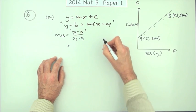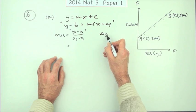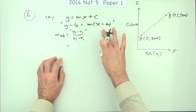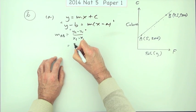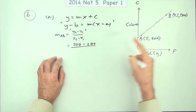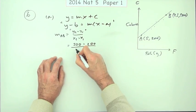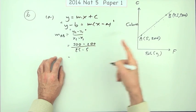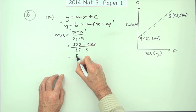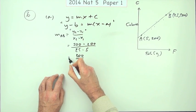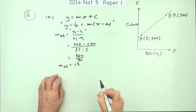So what have we got? 500 take away 200, 300, for the difference in the Y-ish coordinates. 25 take away 5, for the difference in the X-ish, the horizontal coordinates. So 500 take away 200 is 300, 300 over 20, knock out the tens, 15. The gradient of that line is 15.